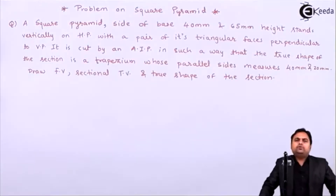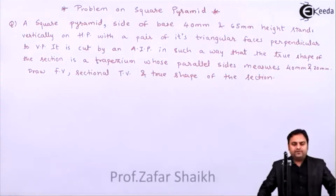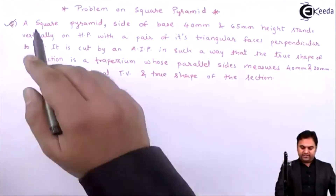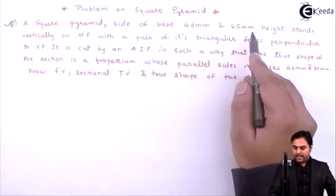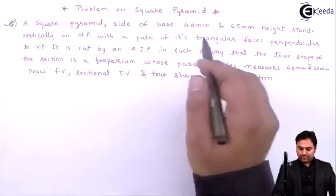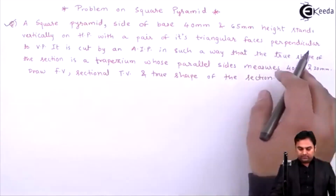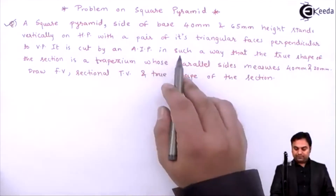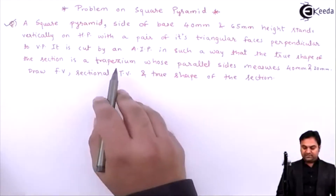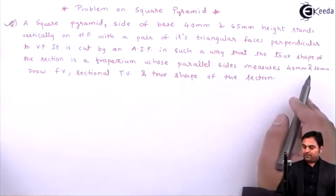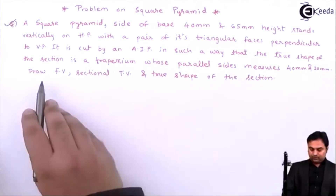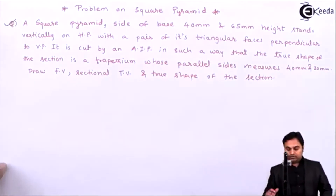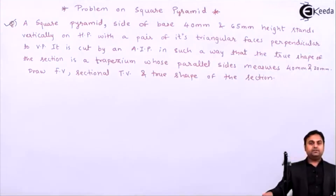Hello friends, in this video we are going to see a problem on section of a square pyramid. The question given is: a square pyramid with side of base 40 mm and 65 mm height stands vertically on HP with a pair of its triangular faces perpendicular to VP. It is cut by an AIP (auxiliary inclined plane) such that the true shape of the section is a trapezium whose parallel sides measure 40 mm and 20 mm. Draw the front view, sectional top view, and true shape of the section.